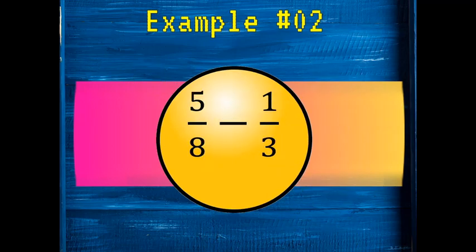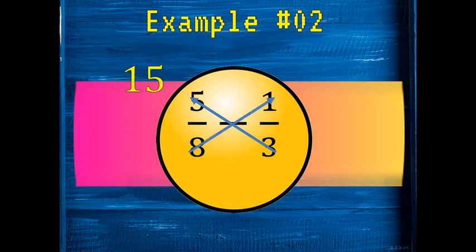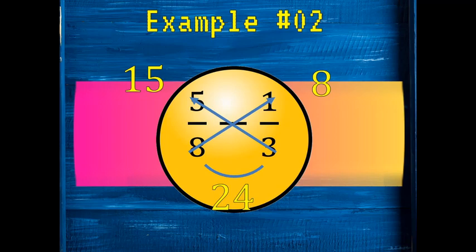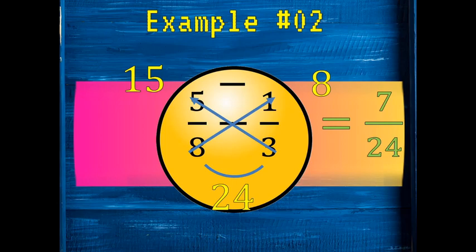Example two: 5/8 minus 1/3. Cross multiply: 5 times 3 gives us 15, and 8 times 1 gives us 8. To get our denominator, multiply 8 and 3, which equals 24. Step two: perform the operation. Since it's subtraction, we subtract 15 minus 8, giving us 7 over 24. Seven over 24 is already in simplest form, so our final answer is 7 over 24.